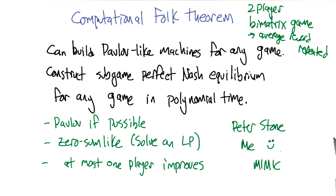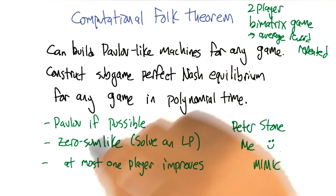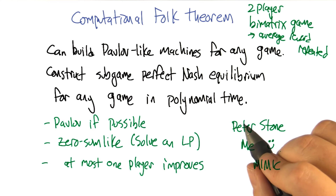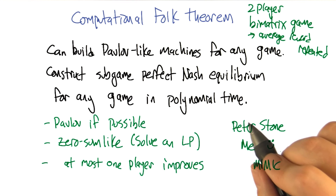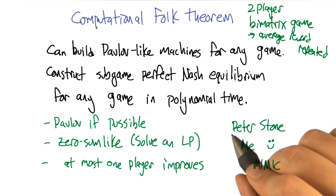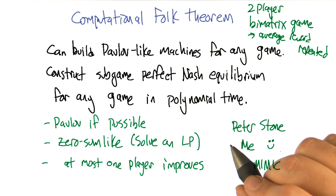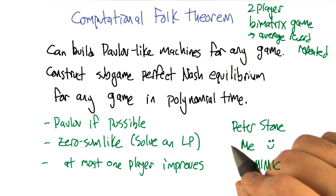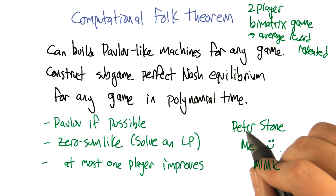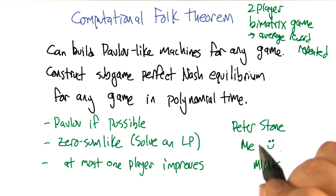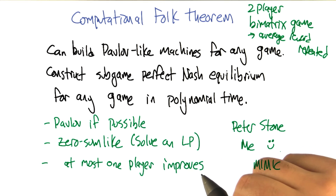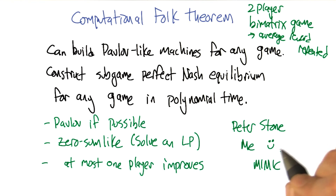That's all I really wanted to say about the folk theorem and repeated games. What I'd like to do now is move to stochastic games, which is a generalization of repeated games, and talk a little bit about how this relates back to things like Q-Learning and MDPs.